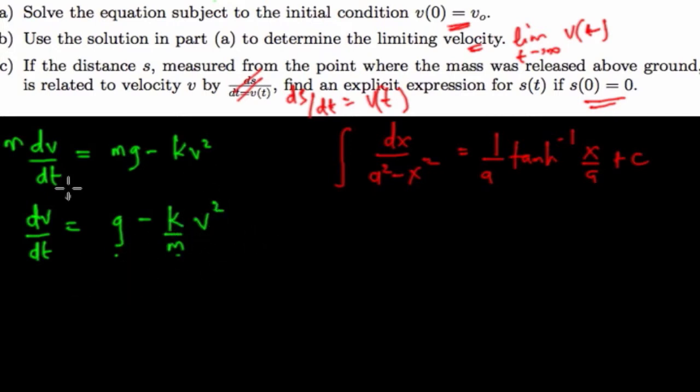So I can just use the separable method, which is very fine. So using that, you have dv divided by g minus k over m v squared equals dt.